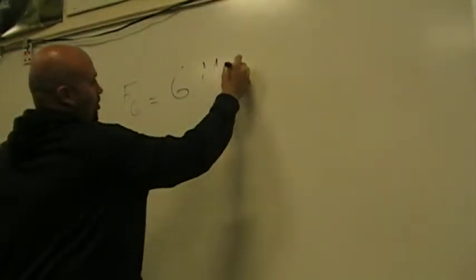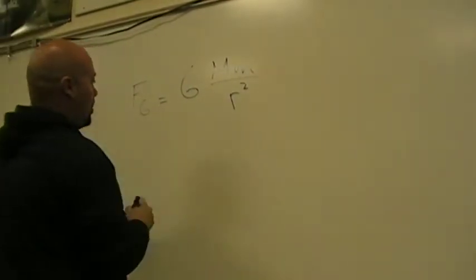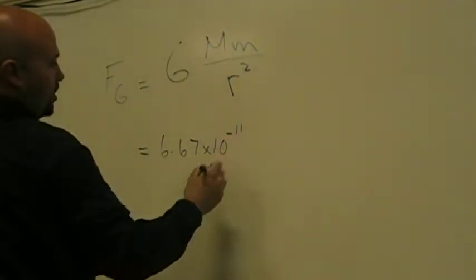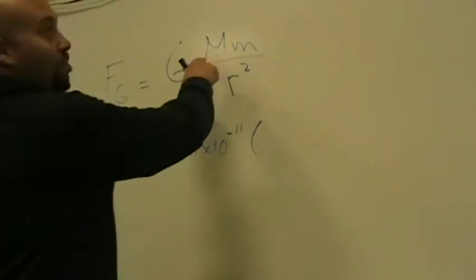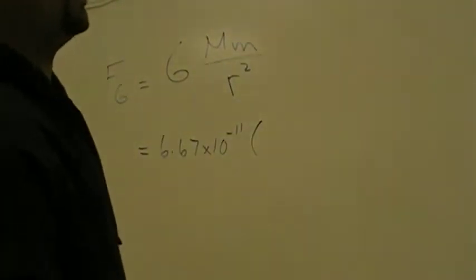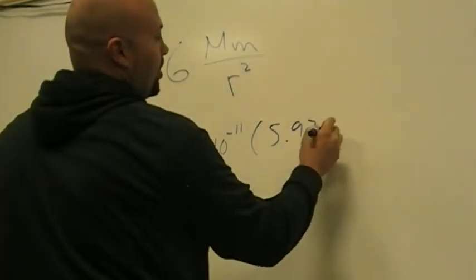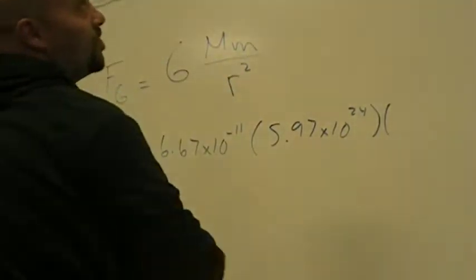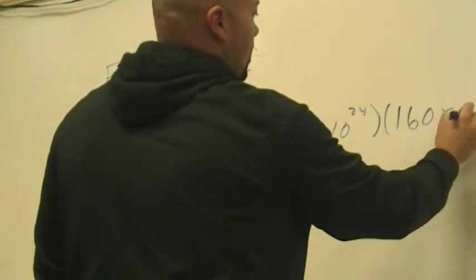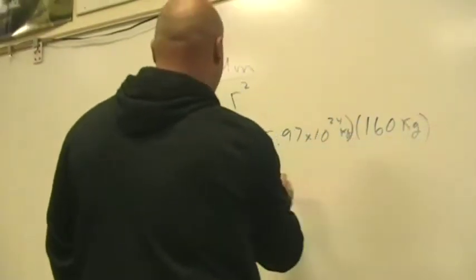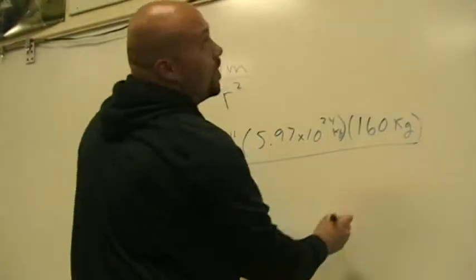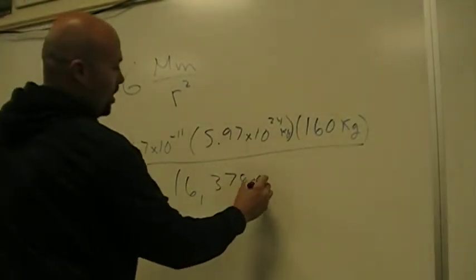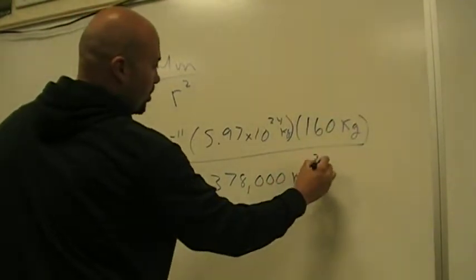That's going to be G times M times m over r squared. The big G is 6.67 times 10 to the negative 11. The big mass or the mass of planet X is 5.97 times 10 to the 24th. The mass of our astronaut is 160 kilograms.